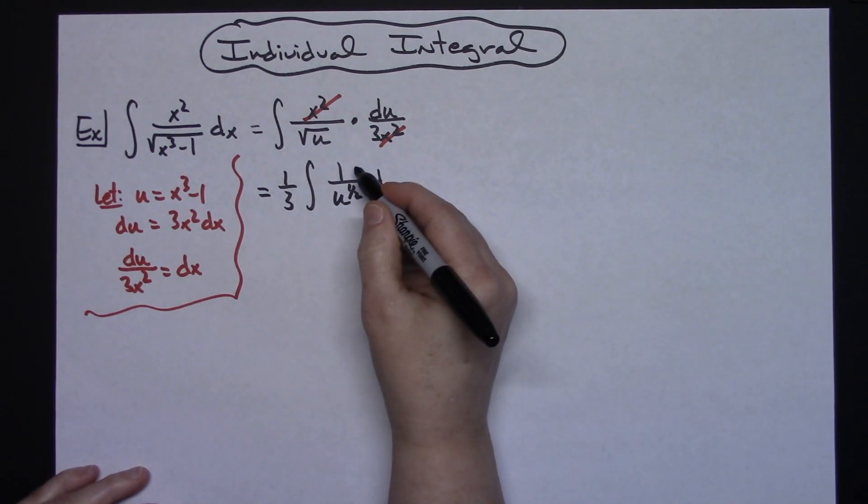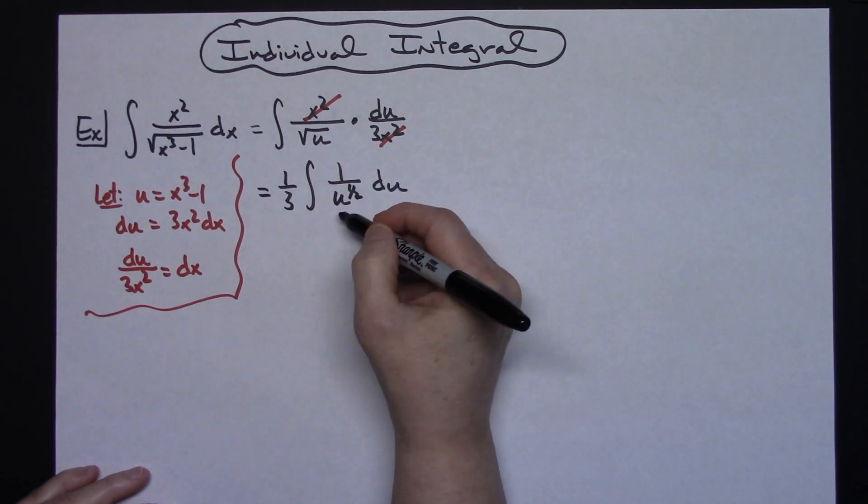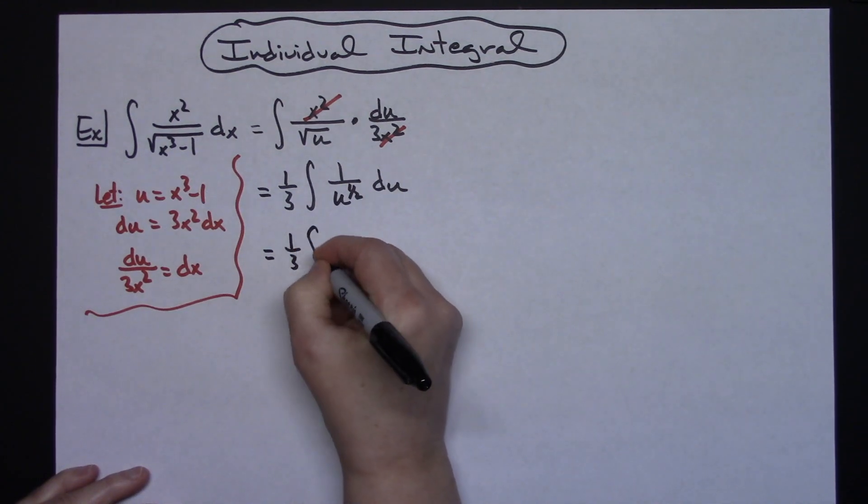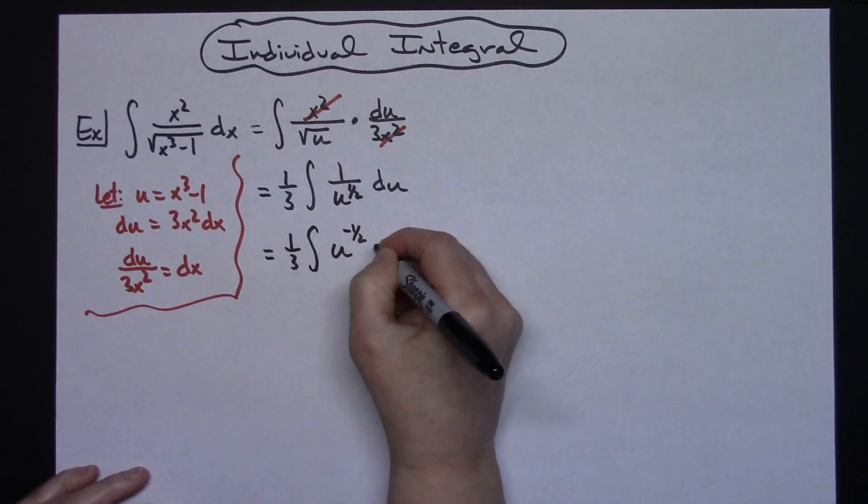Next step is we're going to need to move the u^(1/2) up to the top using our laws of exponents. So then we'll have 1/3 times the integral of u^(-1/2) du.